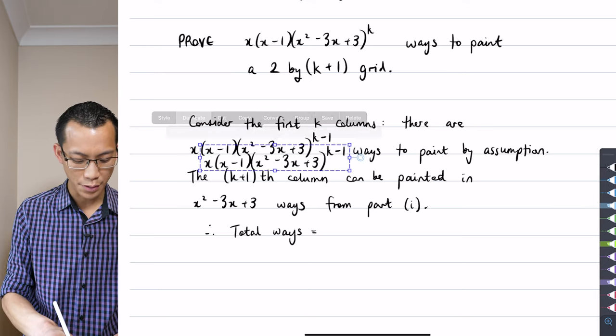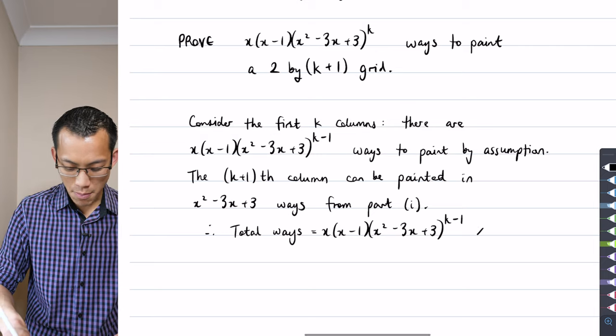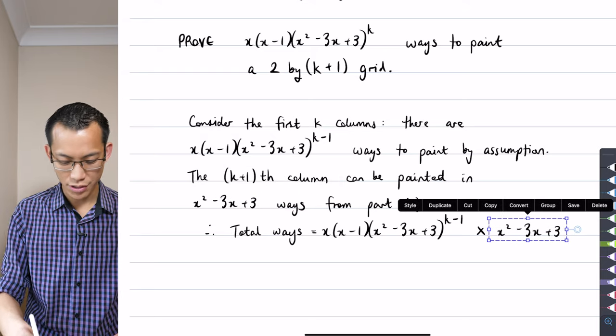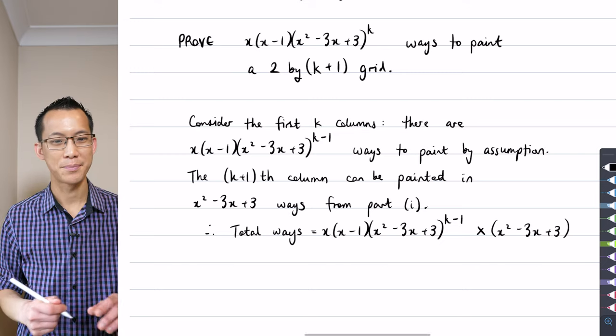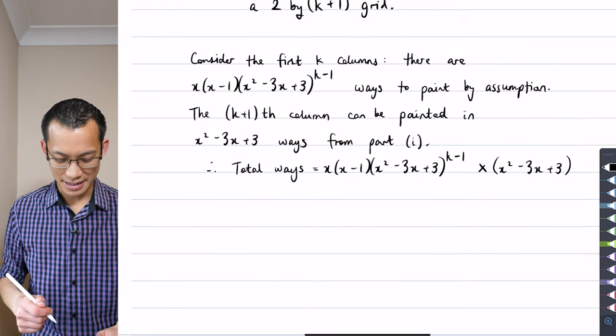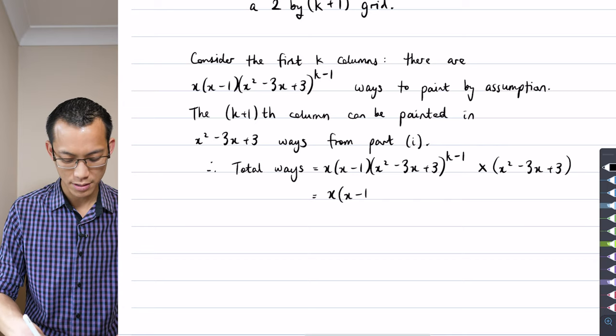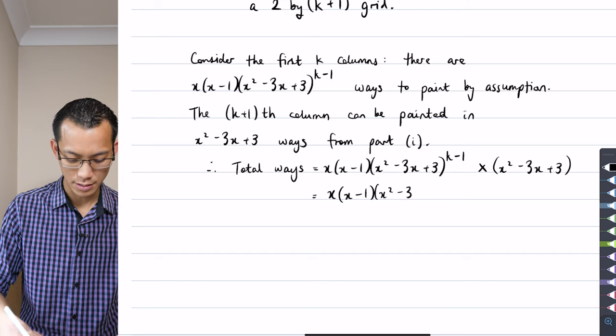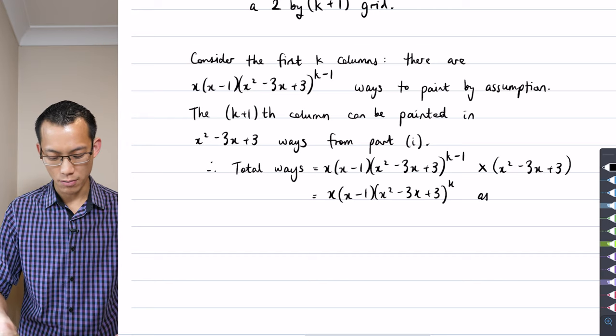So the k plus 1th column can be painted in how many ways? In it's this part right here: x² - 3x + 3 ways and my justification for that is part 1. Proved. So therefore I can now just combine them together by multiplication. I told you there was not much algebraic that you need to worry about. The total number of ways is going to be equal to don't skip anything. The number of ways to do the first k columns there it is and then I'm going to multiply by the number of ways to do the final column which is right here but I better chuck some brackets around that for good measure. Okay so therefore I can say well I'm just going to put this together with my index laws I've got (x-1) and x out the front and then (x² - 3x + 3) to the power of k as required.